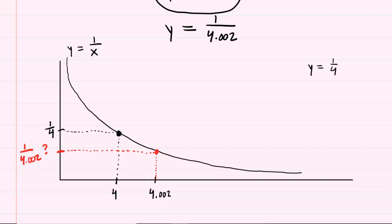And it turns out that it's going to be useful instead of plugging 4.002 into the original function, we're going to plug 4.002 into the tangent line equation. So to understand that, let's draw a tangent line at the point 4 comma 1 fourth, that is, at the black colored point. So we'll have this tangent line, looks something like this.